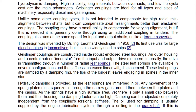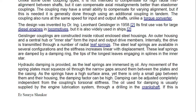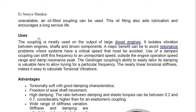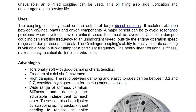The steel leaf springs are dampened by a damping ring; the tips of the longest leaves engage in splines in the inner star. Hydraulic damping is provided as the leaf springs are immersed in oil — any movement of the spring plates squeezes oil through the narrow gap between the plates and the casing. Due to the high surface area and small gap, the damping factor can be high. Damping can be adjusted completely independent from the coupling's torsional stiffness. The oil for damping is usually supplied by the engine lubrication system through a drilling in the crankshaft.